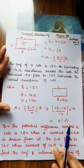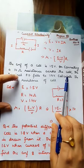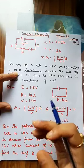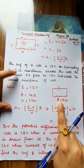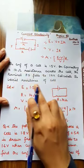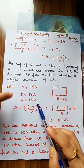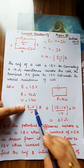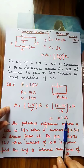Here is your first numerical: the EMF of a cell is 1.5 volt; on connecting a 14 ohm resistance across the cell, E is given, R is given, and V is also given. If you want to calculate the internal resistance, the formula is r equal to E minus V upon V into R. By putting the values of E, V, and R, we find out the small r, which is equal to 0.1 ohm. Very simple numerical.